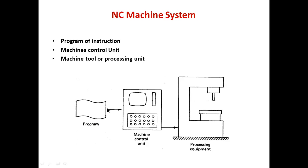The program is coded in numerical or symbolic form on some type of input medium that can be interpreted by the controller unit. The most common input medium was punch tape. Over the years, other input media have been used including punched cards, magnetic tape, and sometimes even 35mm motion picture film. There are two methods of input to the NC system: the first is manual entry of instruction data to the controller unit, called manual data input, abbreviated as MDI, appropriate only for relatively simple jobs that will not be repeated.